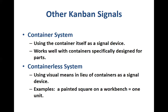Another kind of kanban signal is the containerless system, where instead of a container you use visual means to indicate that a product has to be made or has been made. For example, painted squares on the workbench of a worker serve as small unit squares within which the item is placed once made. When those painted squares are filled, it indicates the required production is complete, and the next workstation can come and take those items for further processing.